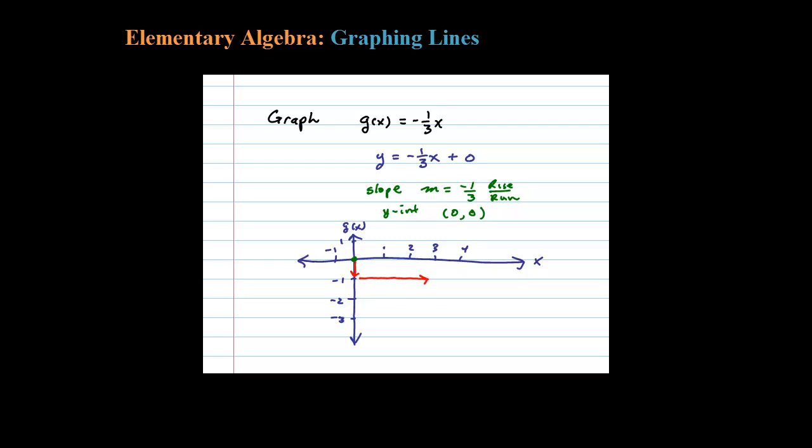Two points determine a line. Once you mark off the slope, just connect the dots. Use a straight edge, and there you go.